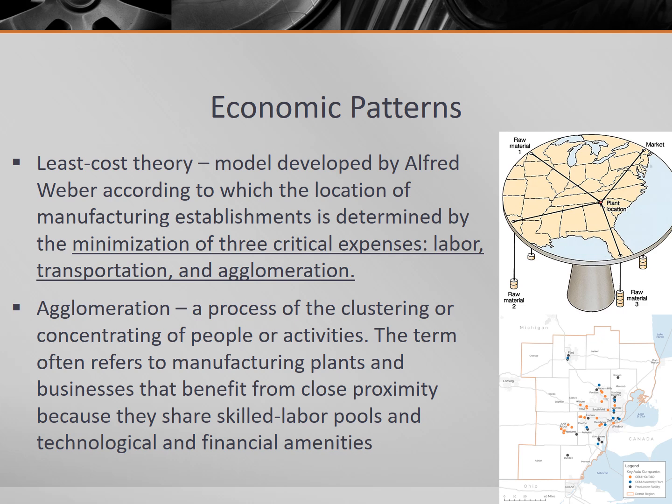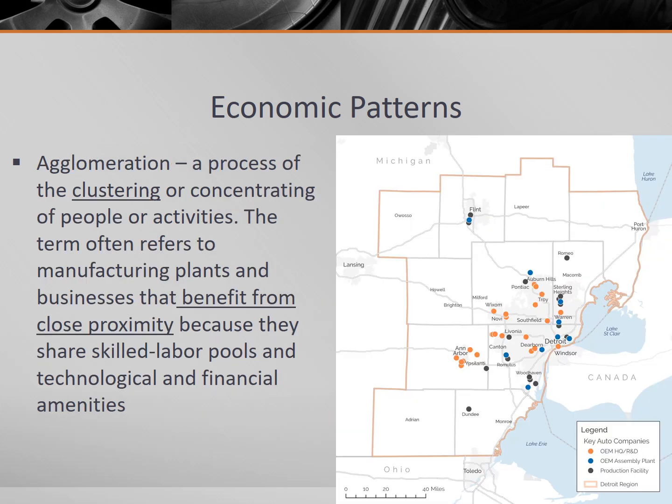Let's start with the last one because it requires us to define the term. Agglomeration is a process of the clustering or concentrating of people or activities. The term often refers to manufacturing plants and businesses that benefit from close proximity, because they share skilled labor pools and technological and financial amenities. Agglomeration can make a location more attractive for a company, potentially overcoming higher transportation or labor costs.